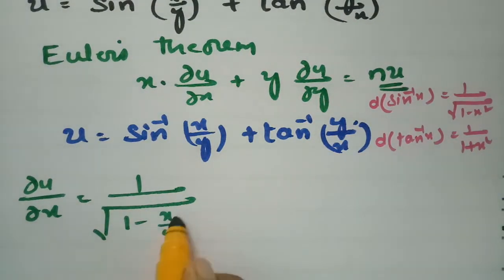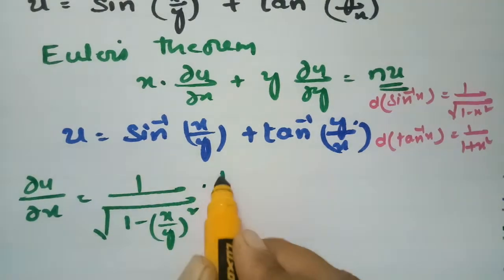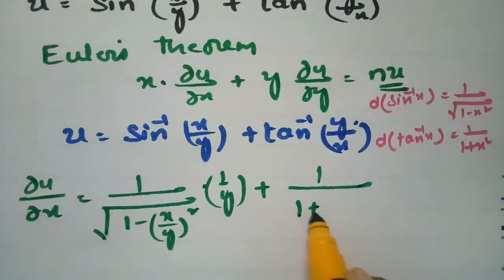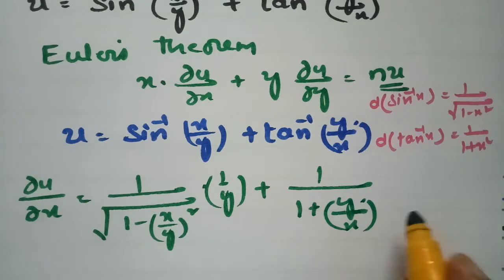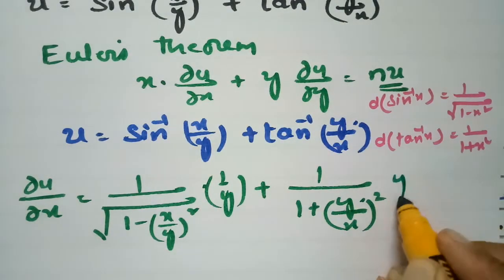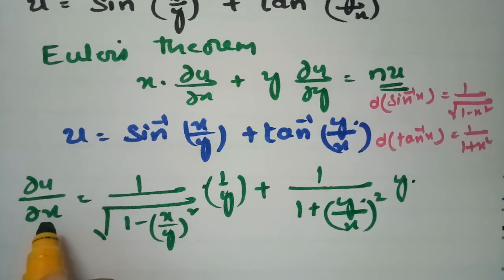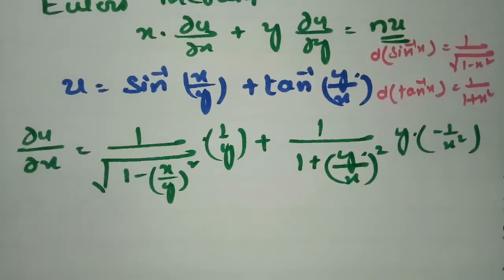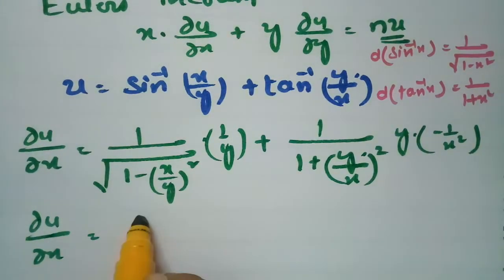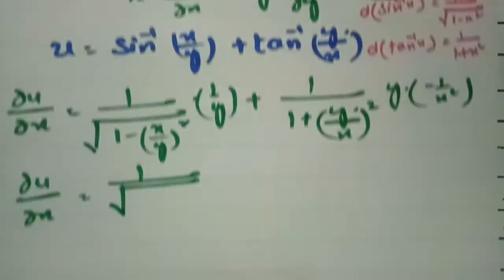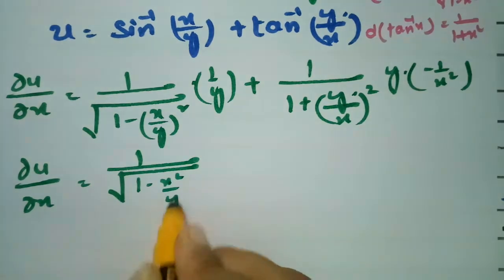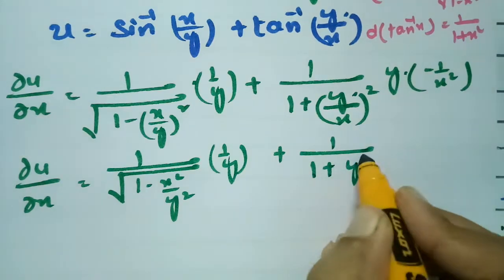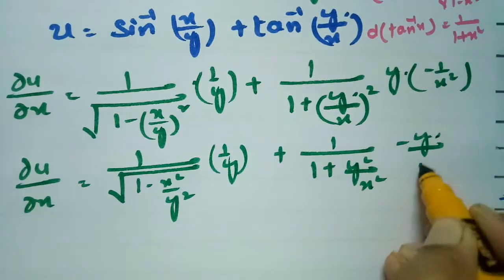For ∂u/∂x: the sin inverse term gives 1 by root over 1 minus x by y whole square, times 1 by y. The tan inverse term gives 1 by 1 plus y by x whole square, and since we treat y as a constant, the derivative of 1 by x is minus 1 by x square. So ∂u/∂x equals 1 by root over 1 minus x square by y square times 1 by y, plus 1 by 1 plus y square by x square times minus y by x square.